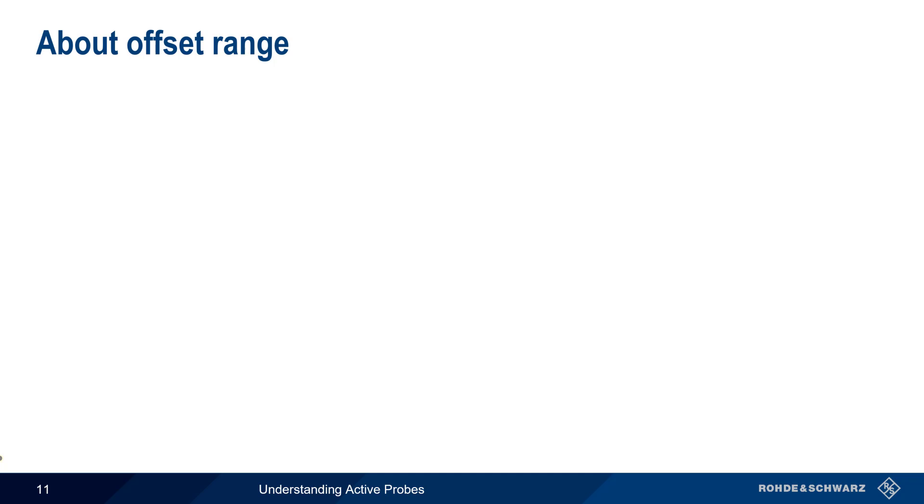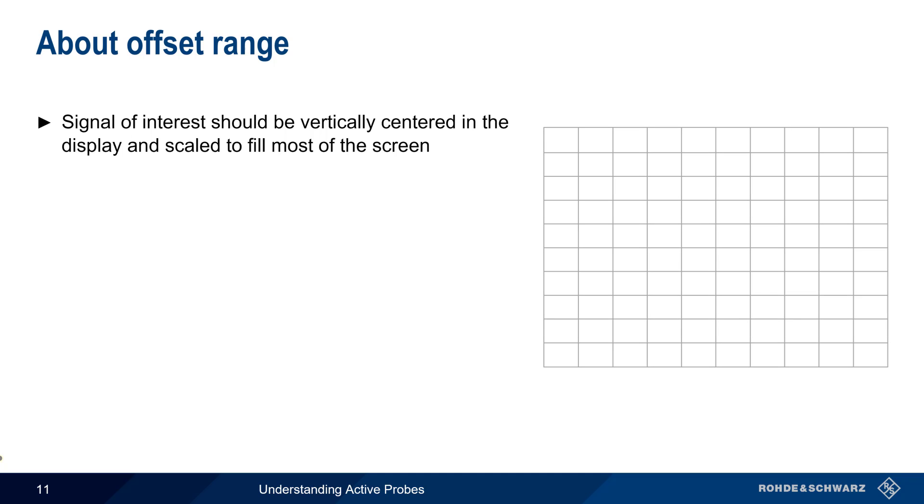The last topic we'll cover is offset range. A good general rule when using an oscilloscope is that the signal of interest should be both vertically centered in the display as well as scaled to fill most of the screen. This maximizes the use of the scope's ADC or analog to digital converter.